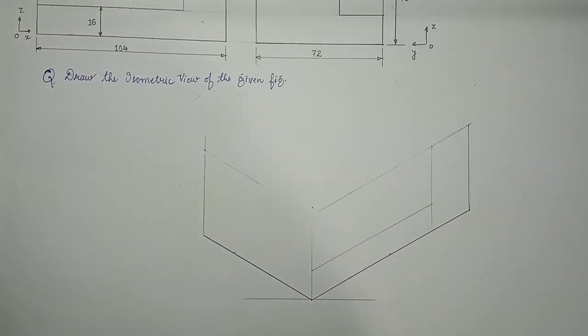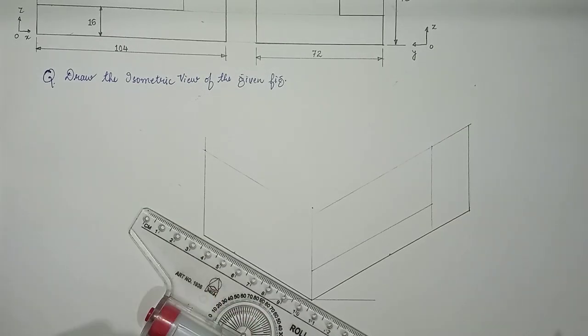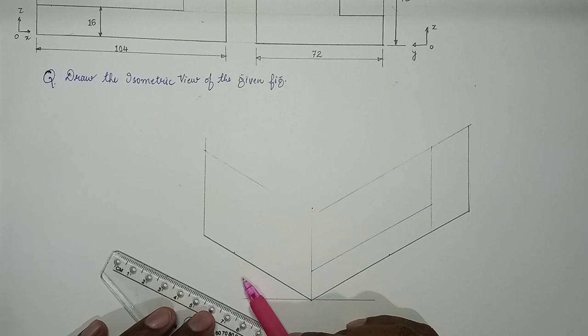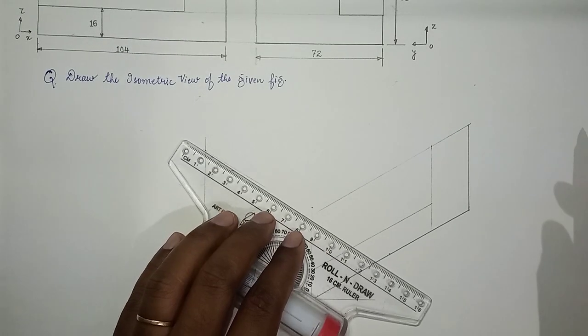So you can enclose this completely into a box, and now we can extend this. This is 72, so we can extend this with the help of roller scale.